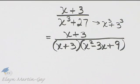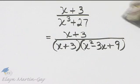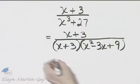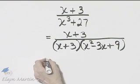Three squared is 9. So I have completely factored the numerator, I have completely factored the denominator, and now we look for any common factors.